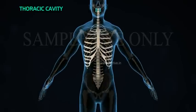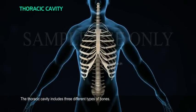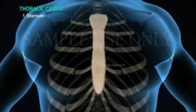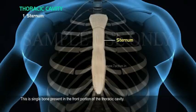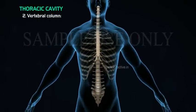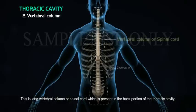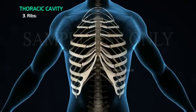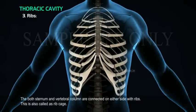Thoracic cavity. The thoracic cavity includes three different types of bones. One, sternum — this is a single bone present in the front portion of the thoracic cavity. Two, vertebral column — this is the long vertebral column or spinal cord which is present in the back portion of the thoracic cavity. Three, ribs — both the sternum and vertebral column are connected on either side with ribs, also called as the rib cage.